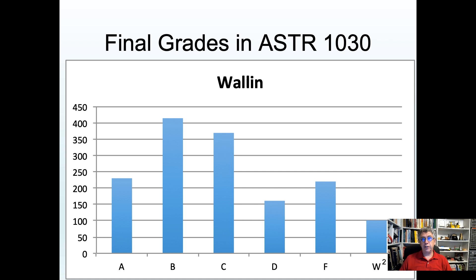This first graph shows the final grades from Astronomy 1030 — the distribution of grades during a semester a couple years ago. You can see there are a lot of As and more Bs and Cs, but also a huge number of Ds, Fs, and Ws for withdraw. It turns out I can usually tell who's going to get a D or F by a simple thing: how much homework and how much attendance you have in class.